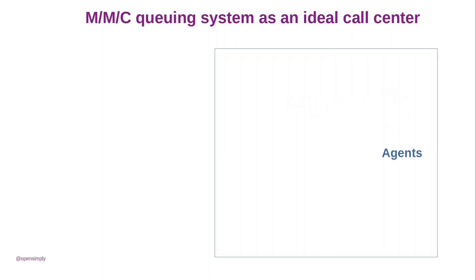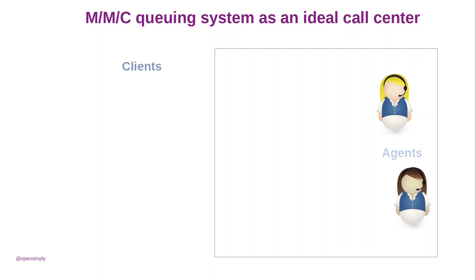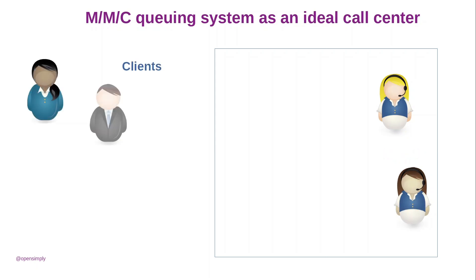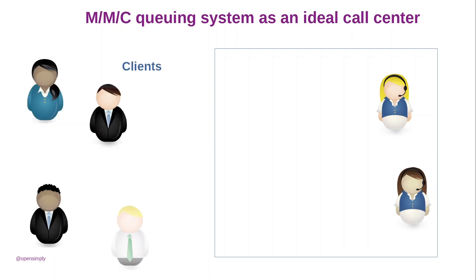There are a certain number of agents and call-in clients. In this example, two agents and more than two clients are considered. At the beginning, all agents are idle.